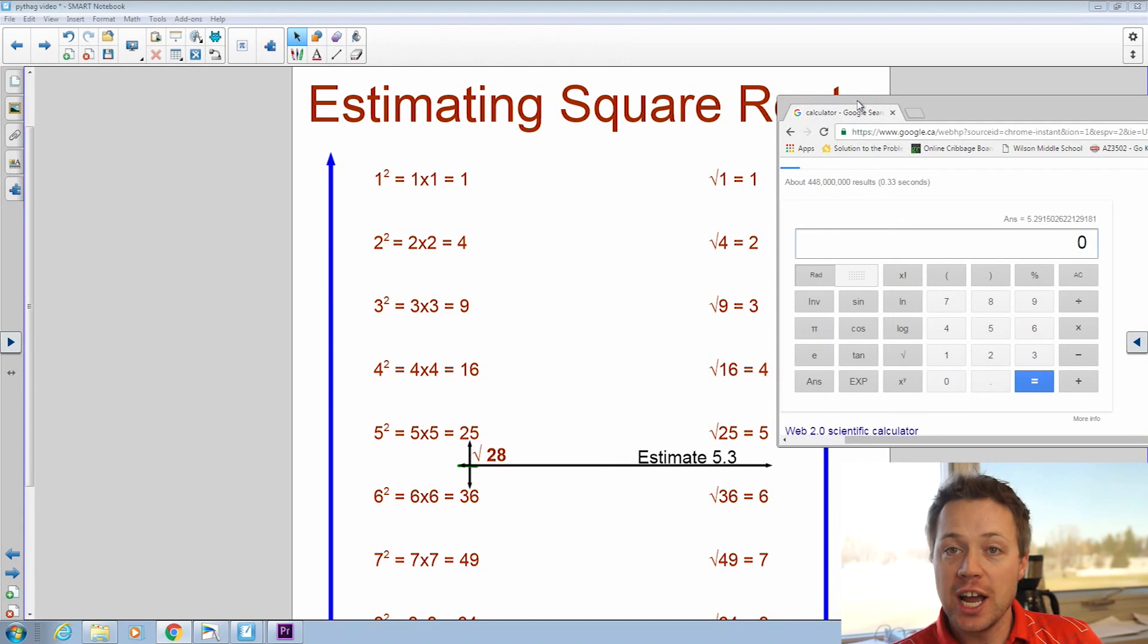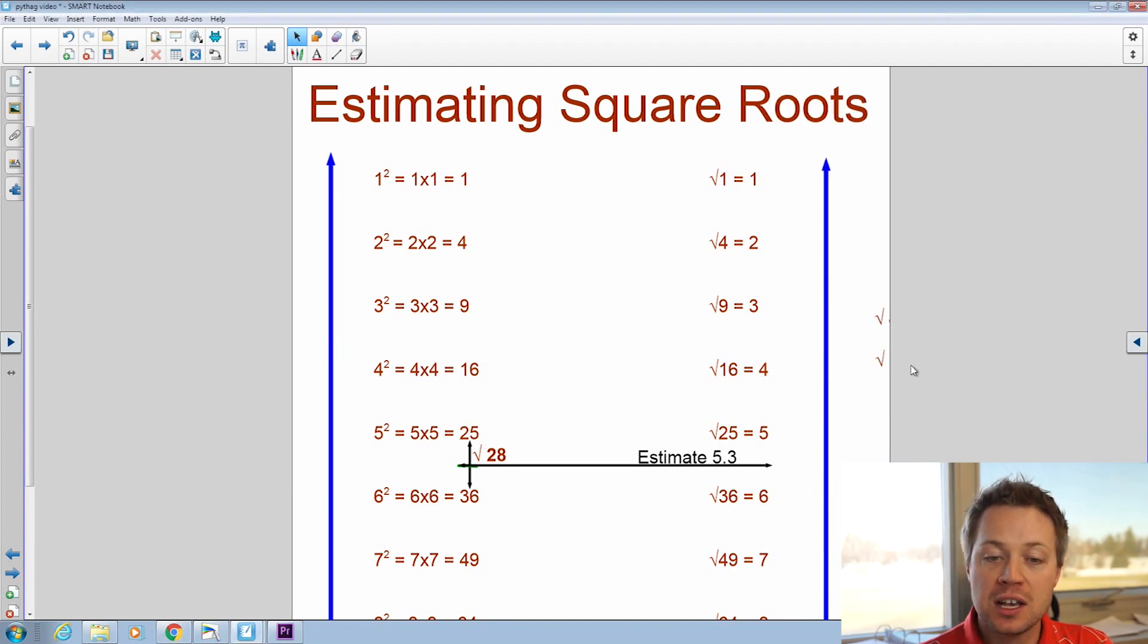So if I check that with my calculator, I'm going to use Google, I can just say square root 28 and press equals, and I get 5.29. My estimate was awfully close of 5.3. So let's go back here.